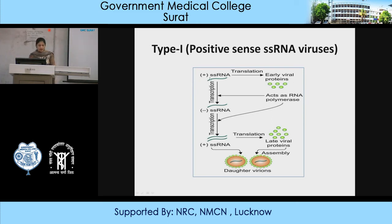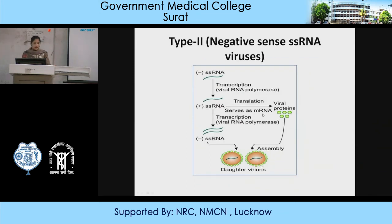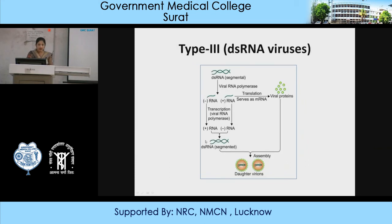For positive single-stranded RNA: it is converted to negative single-stranded RNA, then back to positive single-stranded RNA, with proteins translated to form early viral proteins for capsid and envelope. For negative single-stranded RNA: it is converted to positive, then back to negative single-stranded RNA. For double-stranded RNA as in Reoviridae: RNA polymerase separates the strands into negative and positive sense; negative sense is converted to positive, and positive is transcribed back to negative; they reassemble to form double-stranded RNA and daughter virions.